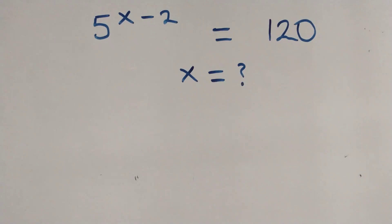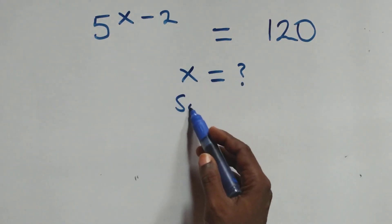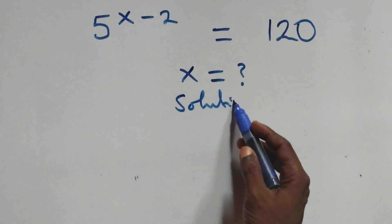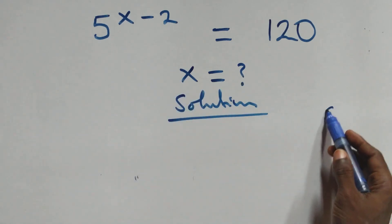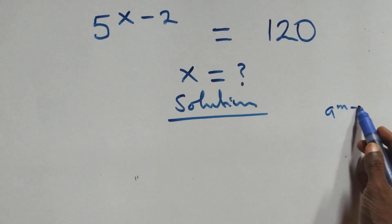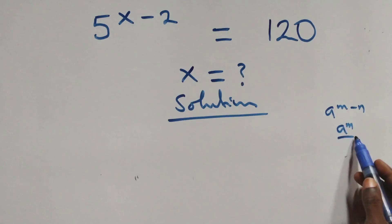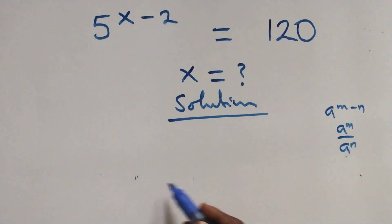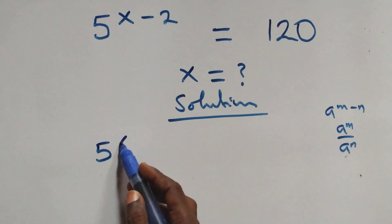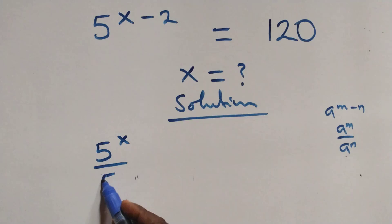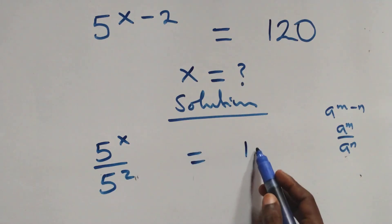Hello, you're welcome. How to solve this nice exponential equation. From what we have here, when we have a raised to power n minus n, we can write this as a raised to power n over a raised to power n. At this here we have 5 raised to power x over 5 squared equals to 120.